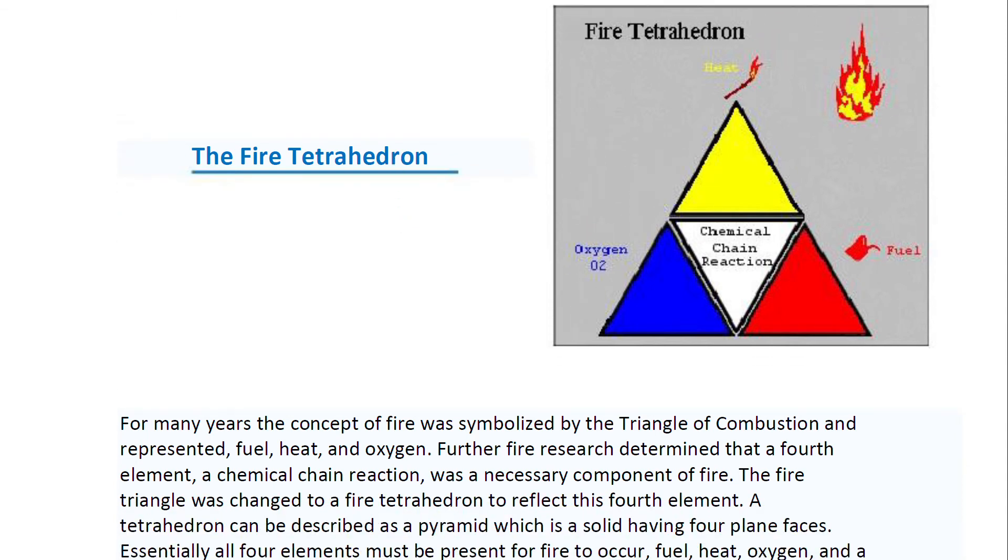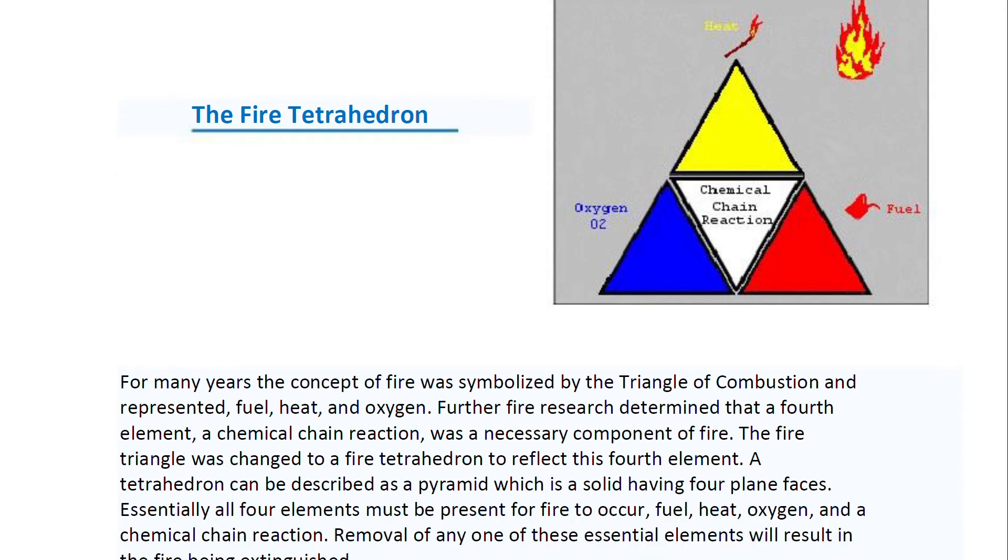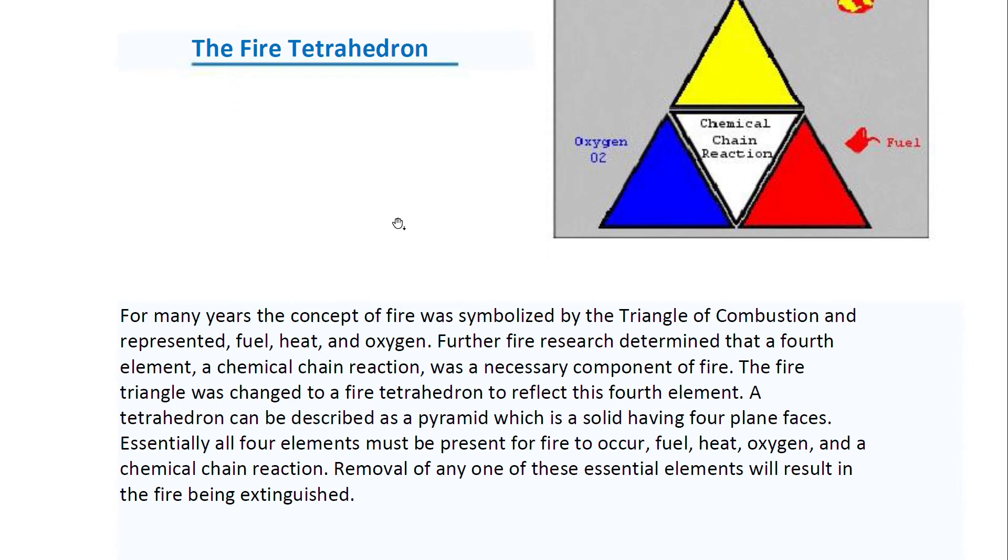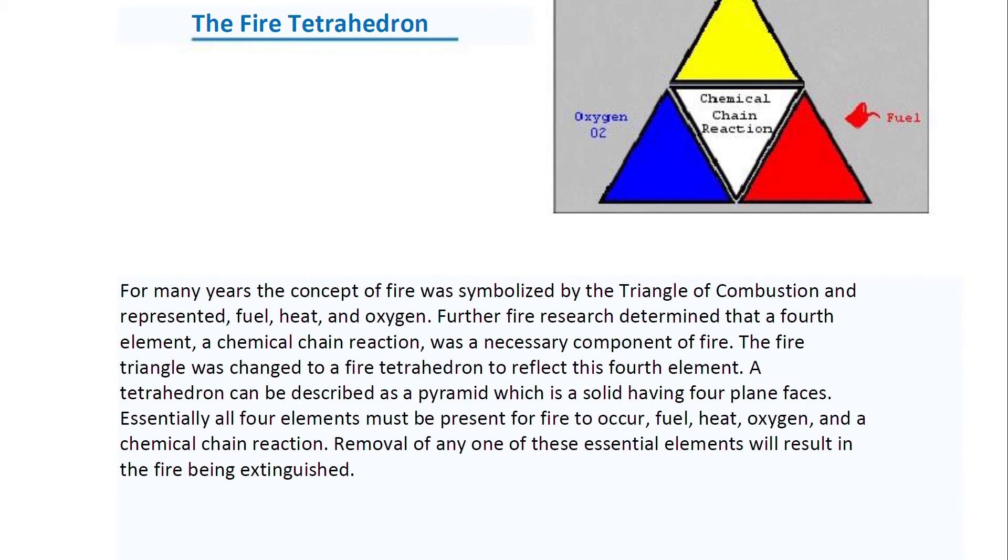The fire tetrahedron. For many years, the concept of fire was symbolized by the triangle of combustion and represented fuel, heat, and oxygen. Further fire research determined that a fourth element, a chemical chain reaction, was a necessary component of fire. The fire triangle was changed to a fire tetrahedron to reflect this fourth element. A tetrahedron can be described as a pyramid which is a solid having four plane faces.